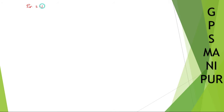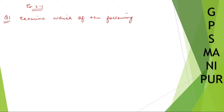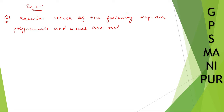Now we are doing chapter number two, polynomials, exercise 2.1, question number one. The question says: examine which of the following expressions are polynomials and which are not, and state the reason for your answer.